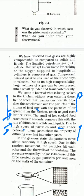In the gaseous state, particles move about randomly at high speed. Because gas particles have spaces between them and less force of attraction, they move here and there randomly at high speed. Due to this random movement, particles hit each other and also the walls of the container. The pressure exerted by a gas is because of the force exerted by the gas particles per unit area on the walls of the container.